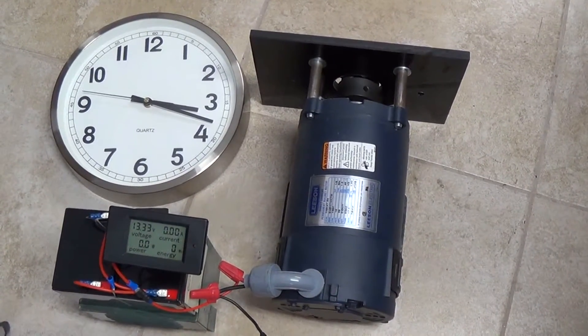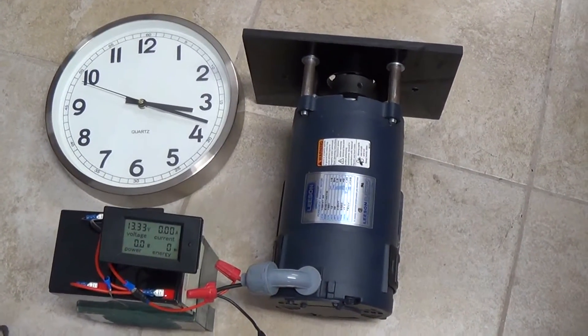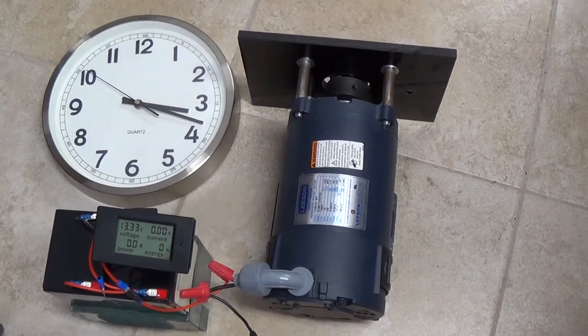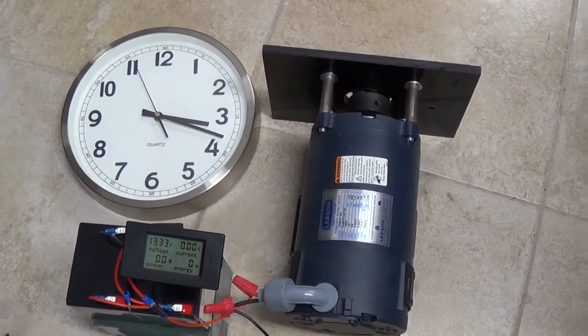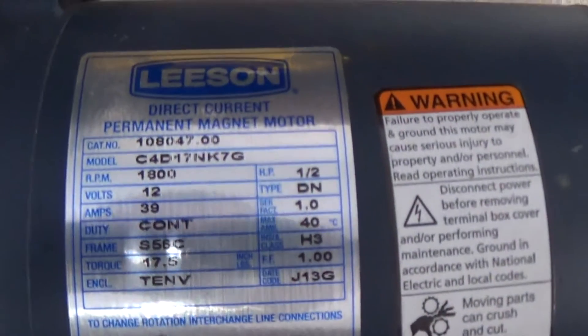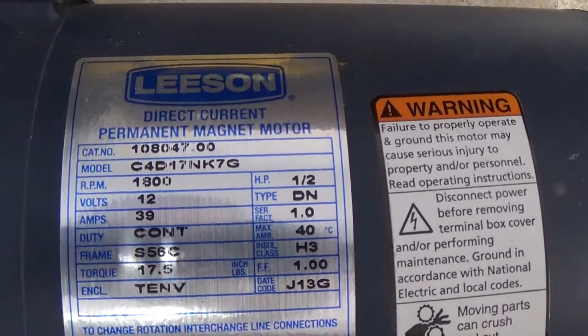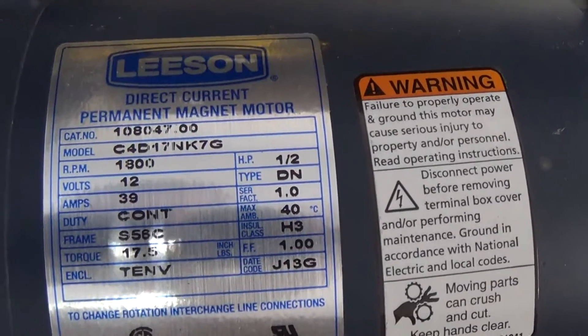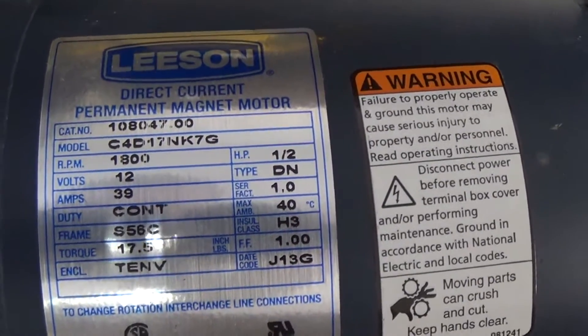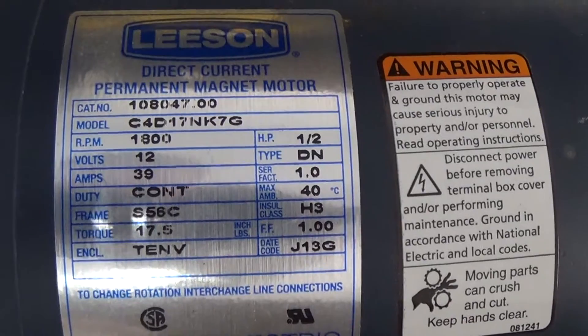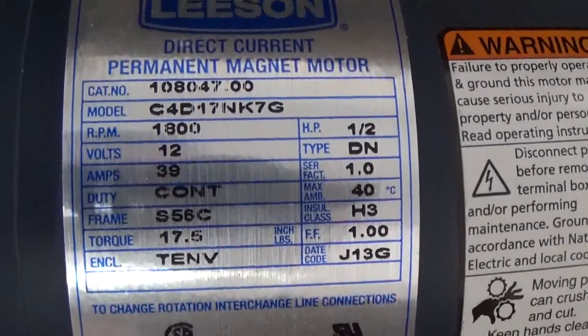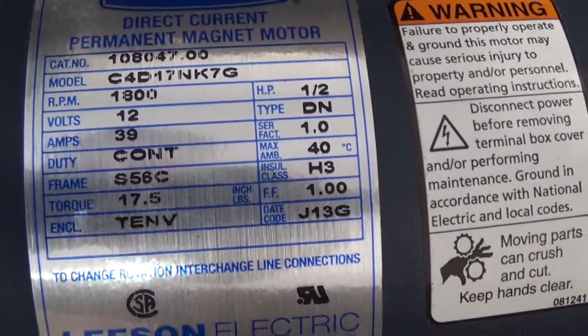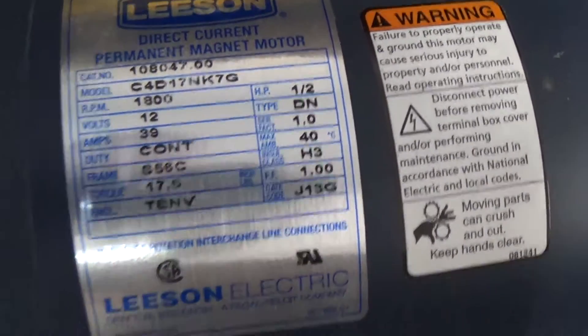This is going to be the basic test to just find the baseline power requirements to operate this motor for a set amount of time. We've got the clock there to monitor that. What we have here is an 1800 RPM, 12 volt DC motor, half horsepower, and it would require somewhere around 39 amps probably to deliver that half horsepower.